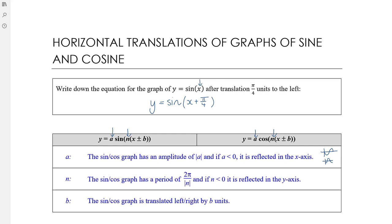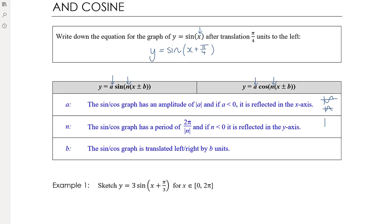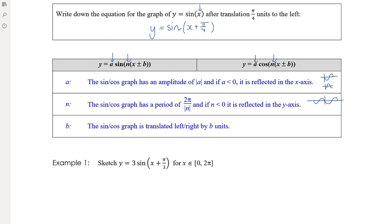If 'n' is negative the graph is reflected in the y-axis. The normal sine graph goes up first as we go from left to right from the origin, so reflecting it in the y-axis gives the same result as reflecting it in the x-axis — so we won't see that very often, we'll just see the negative out the front instead. The cosine graph reflected in the y-axis looks the same as the original, so reflecting in the y-axis doesn't change it.